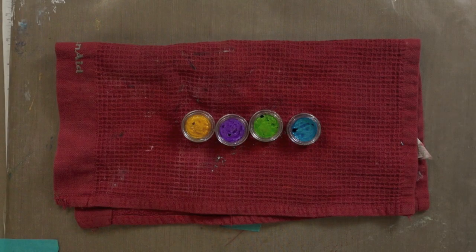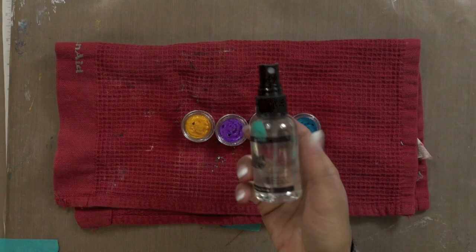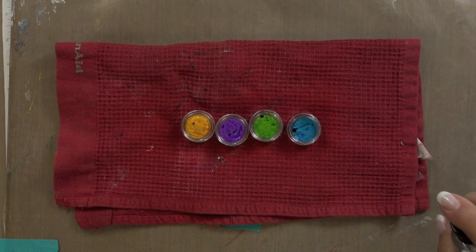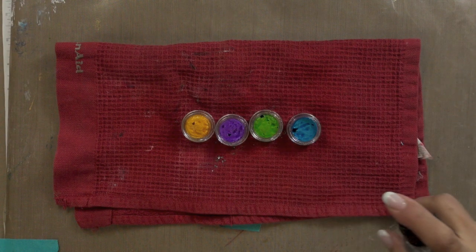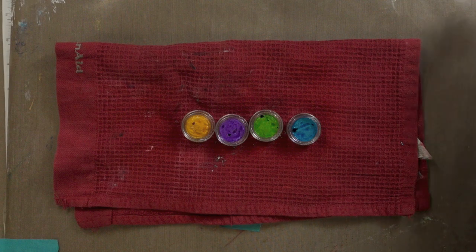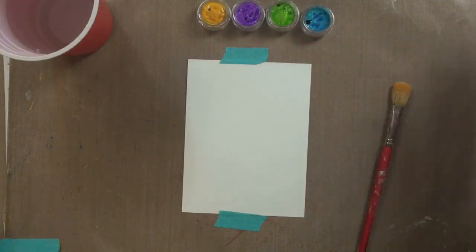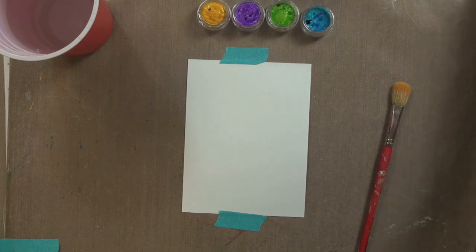So in order to create my watercolor background I chose four different colors of twinkling H2O's. These are a watercolor paint with mica mixed in so they have a beautiful shimmer when they're dry. Now they come in these little pots and they're dry and hard and you need to spritz them with water and let them sit for a few minutes to give the paint a chance to activate.